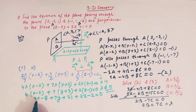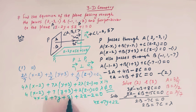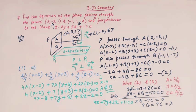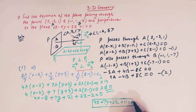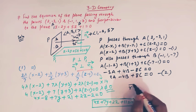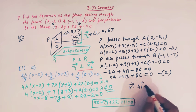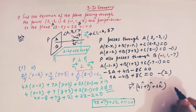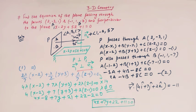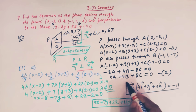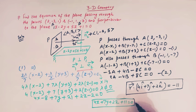Simplifying the constants: 21 - 8 - 2 = 11. So the Cartesian equation of plane P is 4x + 7y + 2z + 11 = 0. We can also express this in vector form as: r⃗ · (4î + 7ĵ + 2k̂) = -11. This is how we solve this problem.